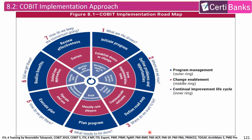The second topic is the COBIT Implementation Approach. It has seven phases and three rings. The seven phases are: What are the drivers? Where are we now? Where do we want to be? What needs to be done? How do we get there? Did we get there? And how do we keep the momentum going? The three rings are Program Management, Change Management, and Continual Improvement Life Cycle.